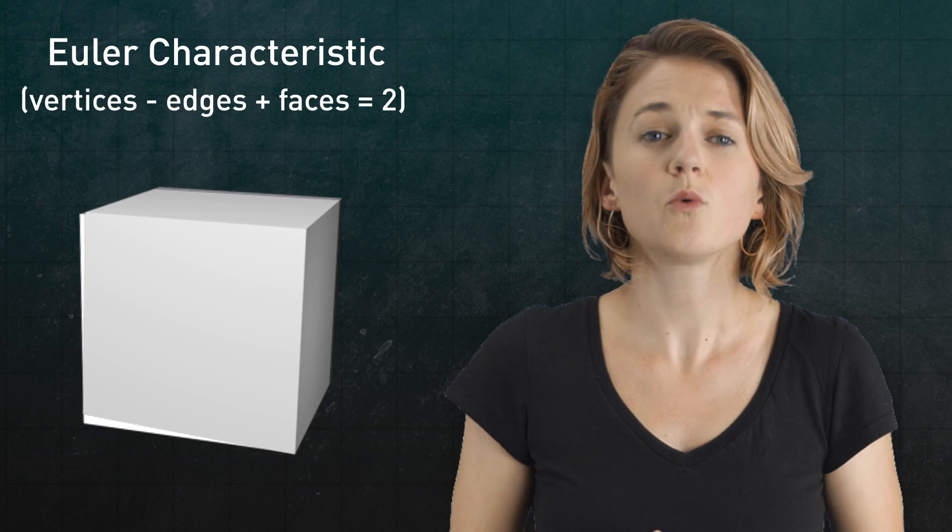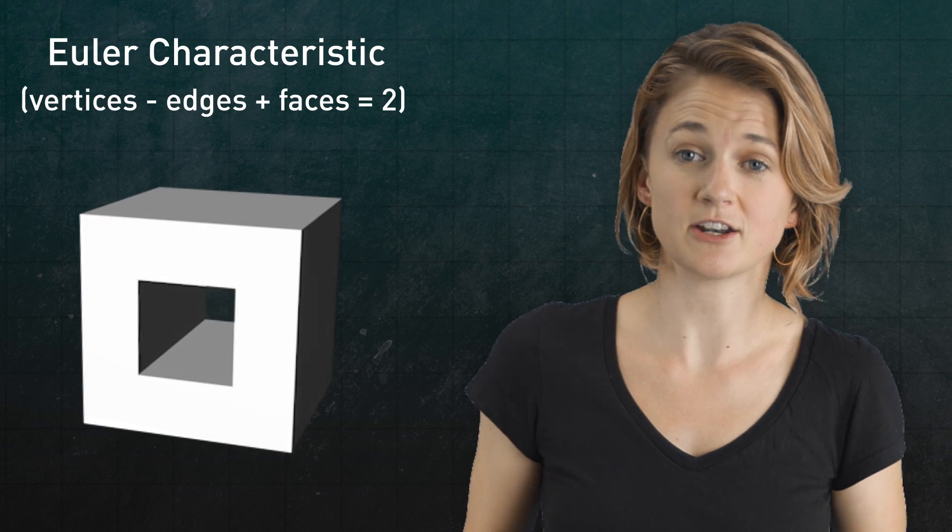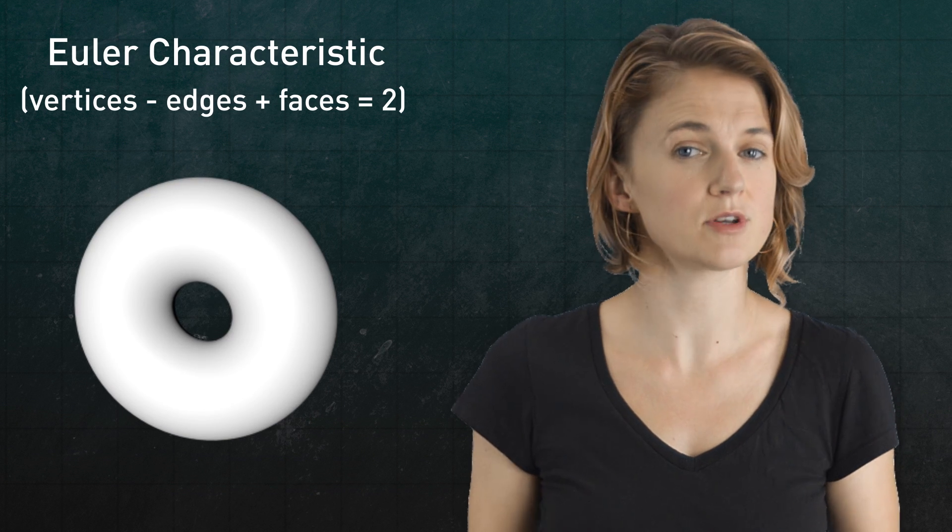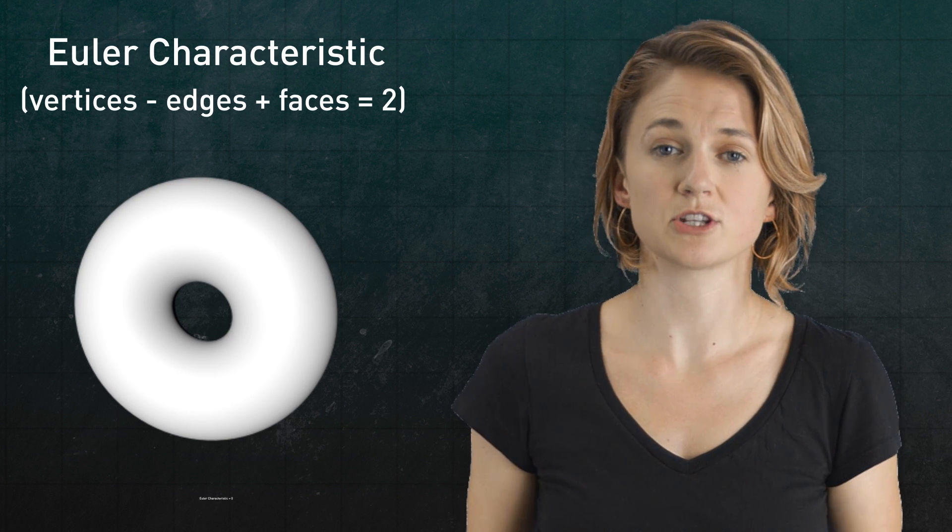Let's focus on the cube. What happens if we take a chunk out of the center? So now it looks like a torus, or hollow donut. The Euler characteristic drops to zero.